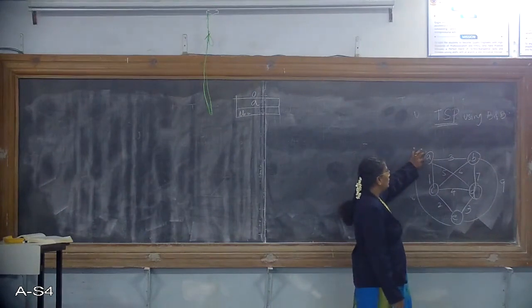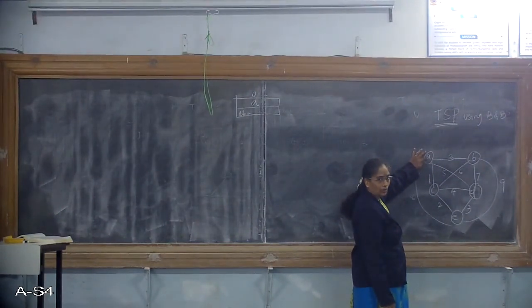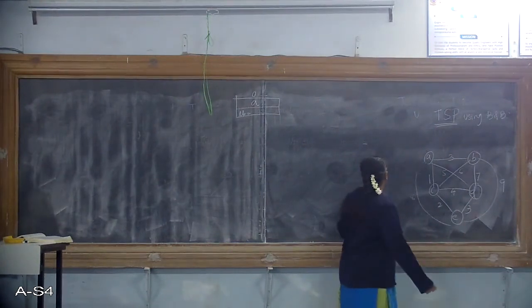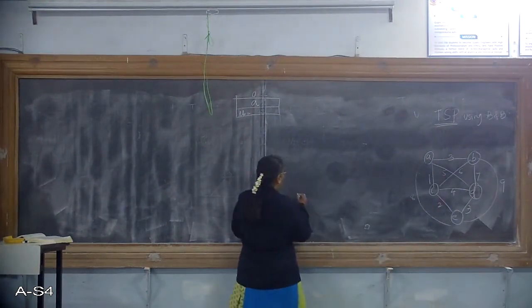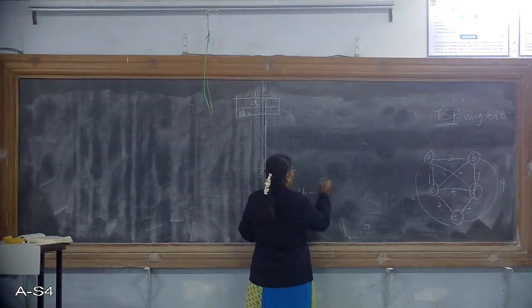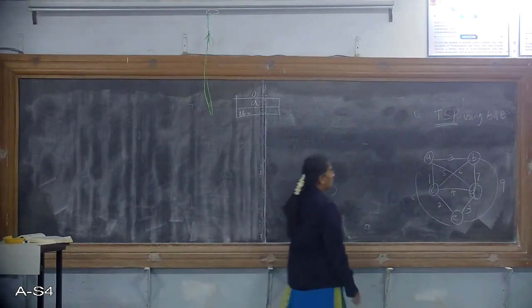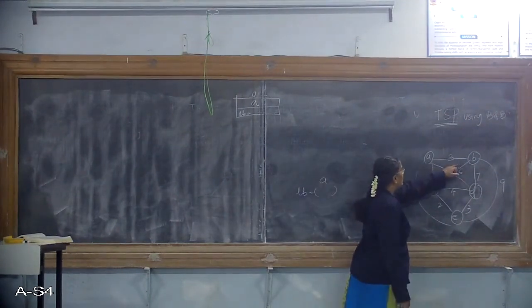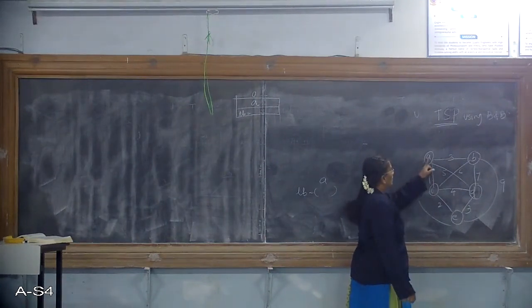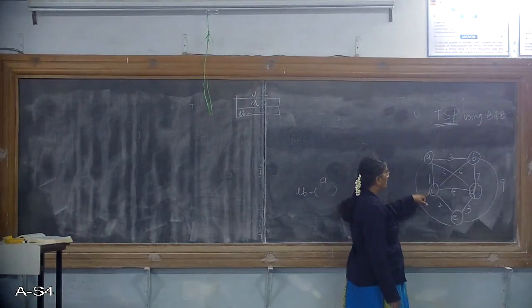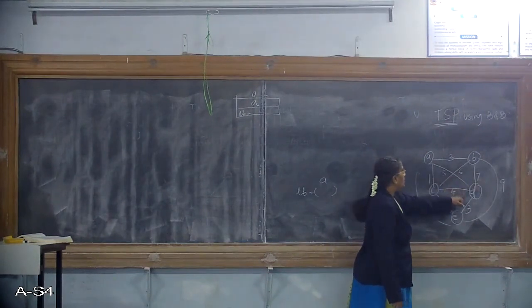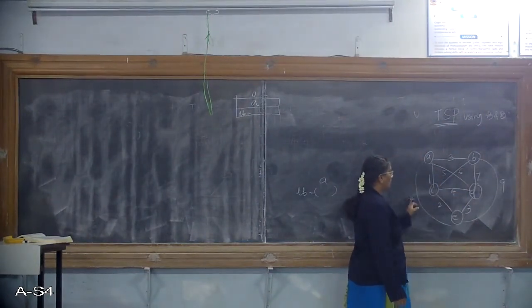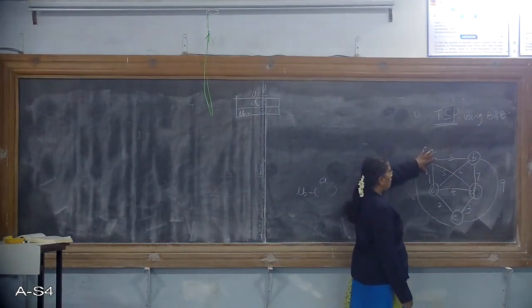We are targeting to calculate the least cost value. For node A, you need to find the two least cost values. From A: A to B is 3, A to C is 1, A to D is 5, A to E is 8. The two smallest values from A are 1 and 3.